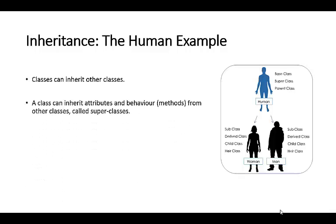A class can inherit attributes and behaviours, also known as methods, from other classes, and these are called superclasses. If you look on the right-hand side, you can see a little example. If we had a class which was a human class, we would call that a parent class, a base class or a superclass. From that, we could produce a woman class or a man class. These classes which inherit others are called subclasses, derived classes, child classes or heir classes.